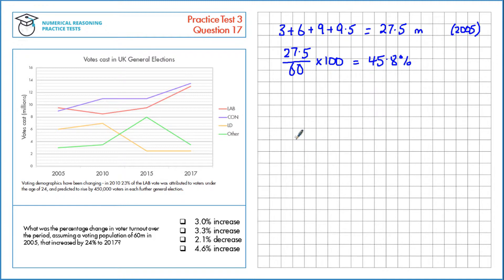The next thing, we need to do the same calculation, but for 2017. So in 2017, our voter turnout is the sum of these values here. So that's 2.5 plus 3.5 plus 13 plus 13.5. That's a total of 32.5 million votes in 2017.